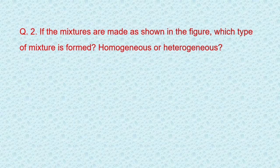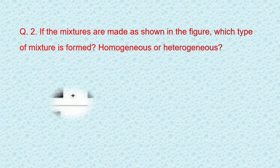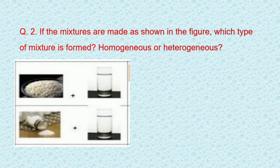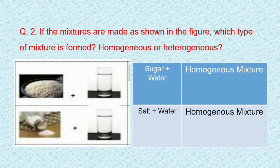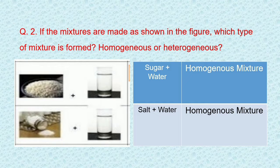Question number two: If the mixtures are made as shown in the figure, which type of mixture is formed, homogeneous or heterogeneous? In first mixture, sugar and water is mixed and the mixture is homogeneous mixture. While in second figure, salt and water is mixed. This is also homogeneous mixture.